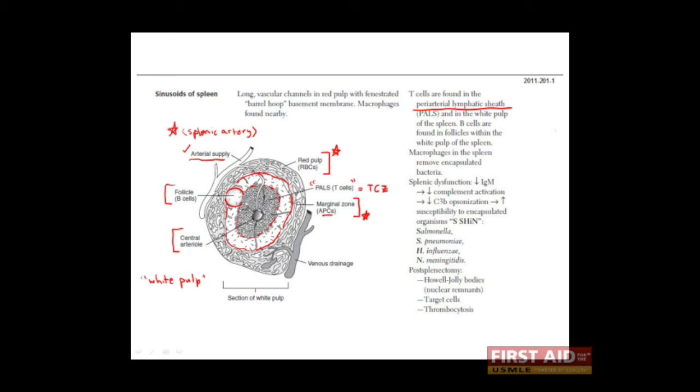When the blood enters the red pulp in the marginal zones, macrophages are present, and these macrophages are particularly good at recognizing, phagocytosing, and destroying encapsulated organisms. The most important being Salmonella, Streptococcus pneumoniae, Haemophilus influenzae, and Neisseria meningitidis.